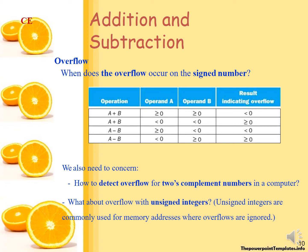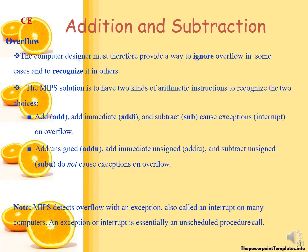Computer designers must provide a way to ignore overflow in some cases and recognize it in others. The solution is to have two kinds of arithmetic instructions. Add, add immediate, and subtract cause exceptions on overflow. Add unsigned, add immediate unsigned, and subtract unsigned do not cause exceptions on overflow.